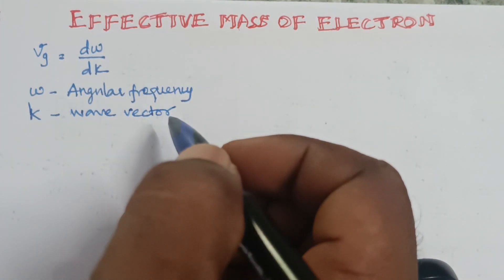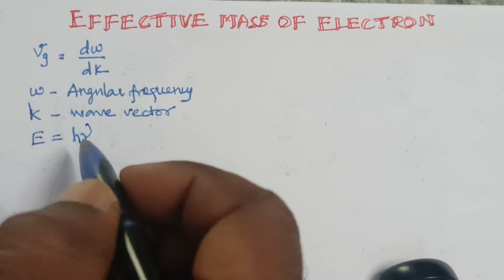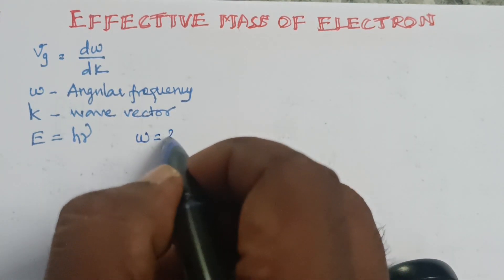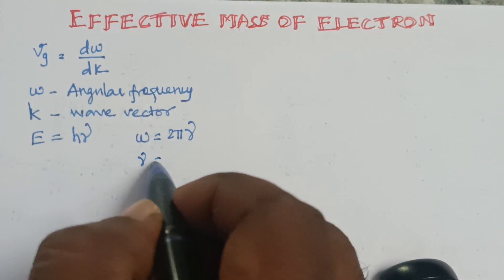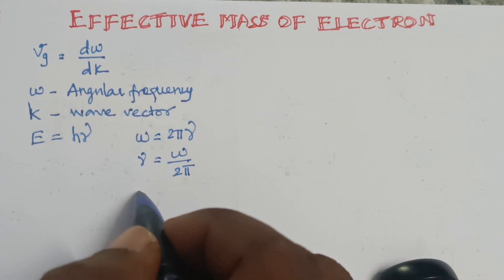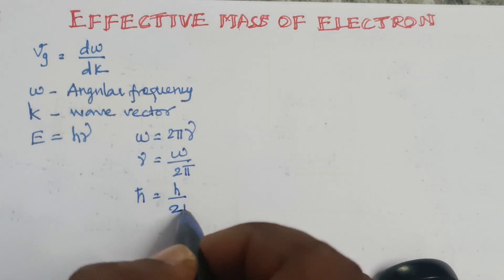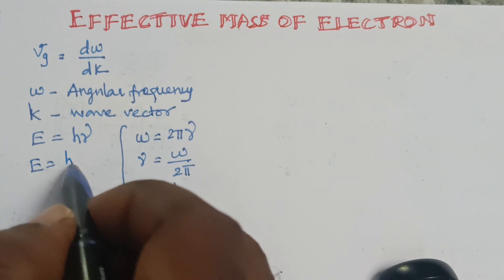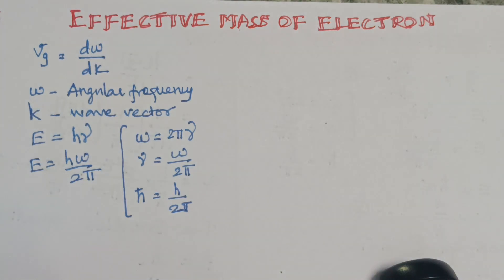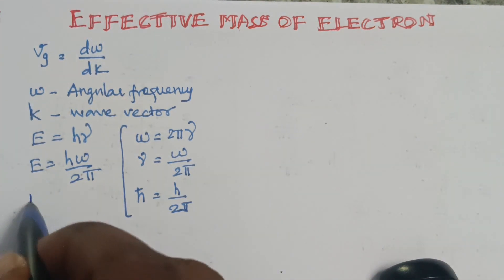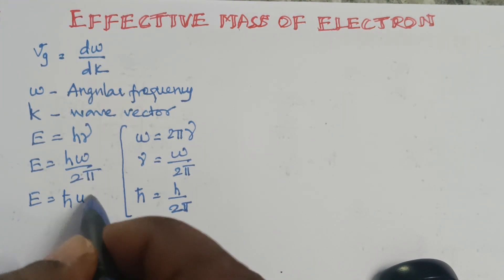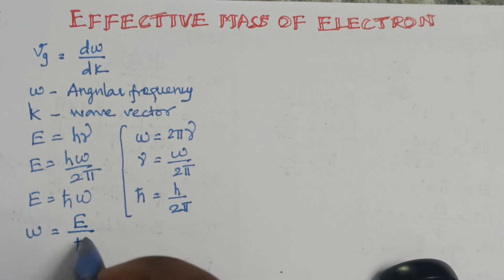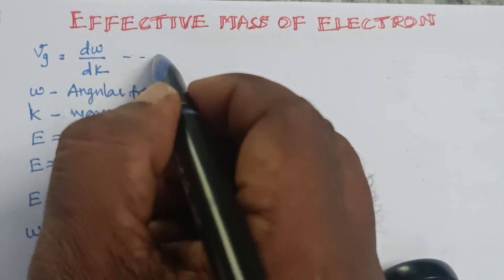We already know that energy E is equal to hν. From this, ω = 2πν, so ν = ω/2π. The reduced Planck's constant ℏ = h/2π. Substituting, E = h × (ω/2π) = ℏω. Therefore ω = E/ℏ. This is equation 2, and E = ℏω is equation 1.